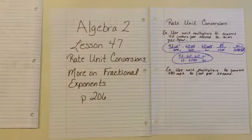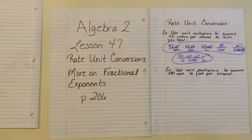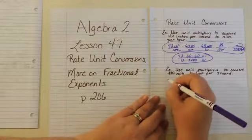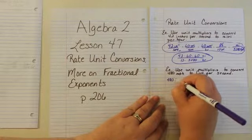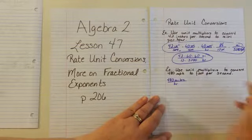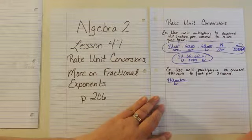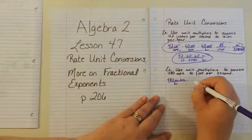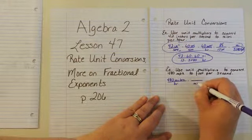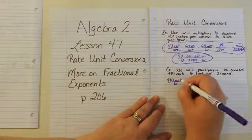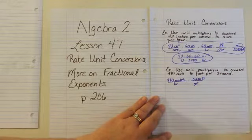Here's another one. Use unit multipliers to convert 480 miles per hour to feet per second. We have 480 miles per hour and we want to go to feet per second. We started with the time last time, so let's start with the distance this time. One mile is 5,280 feet, so our miles cancel and we're already left with feet.